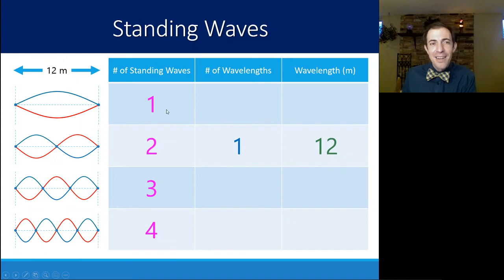If we look instead at number one, so the number of standing waves is one, that would mean that it's only half of a wavelength. If there's half a wavelength in 12 meters, then the wavelength is 24 because it would take 24 meters for one complete wave to happen.